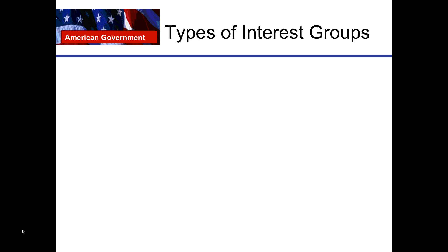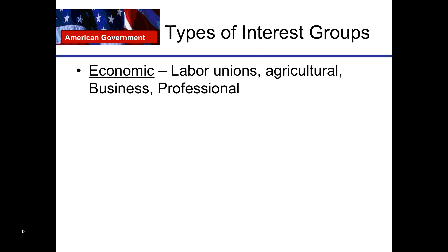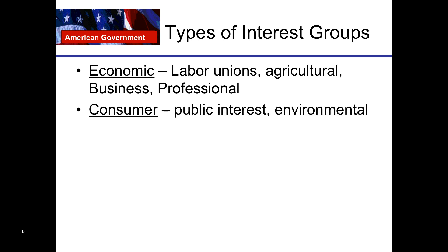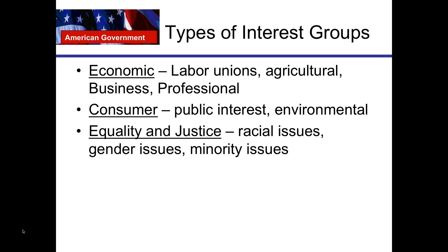There are different types of interest groups. You have economic interest groups — labor unions, agricultural groups, business groups, and professional groups usually fall into this category. You have consumer groups and public interest groups; environmental groups fall into a consumer interest group. You also have groups concerned with equality and justice, including groups that deal with racial issues, gender issues, and issues for other minorities.